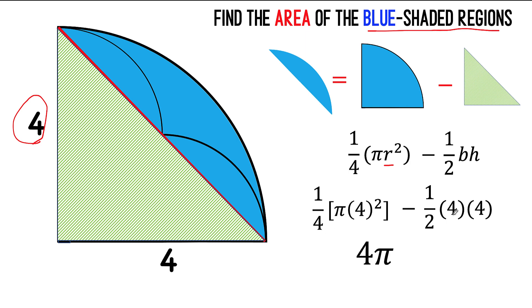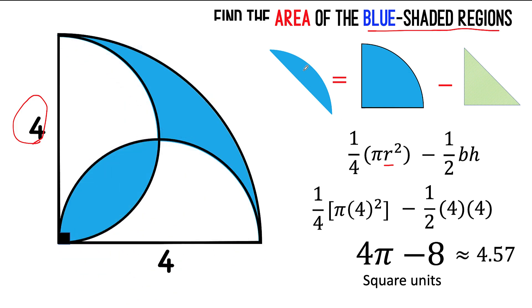One-half of four is two times four is eight. So, four pi minus eight square units is now the area of the blue shaded region that we would like to find.